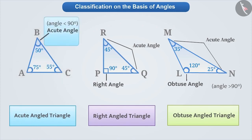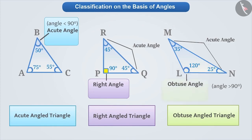Triangles in which all angles are acute angles are called acute angle triangles. Triangles with one right angle are called right angle triangles. Remember that the right angle of a right angle triangle is represented with a small square symbol. Therefore, if an angle in a triangle is marked like this, you can easily identify it as a right angle triangle. Similarly, triangles in which one angle is an obtuse angle are known as obtuse angle triangles.